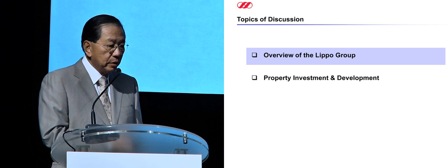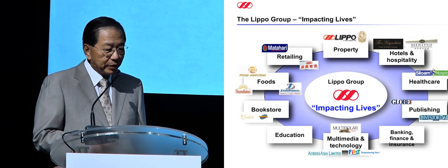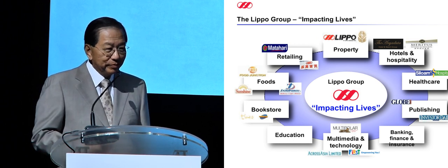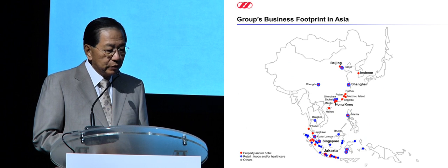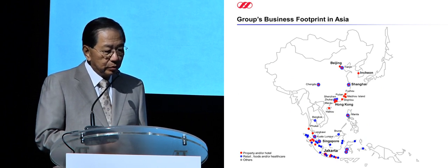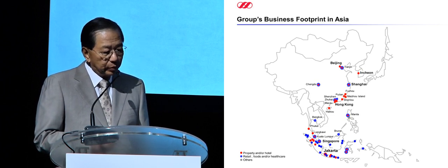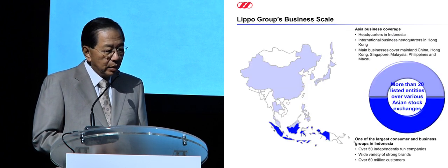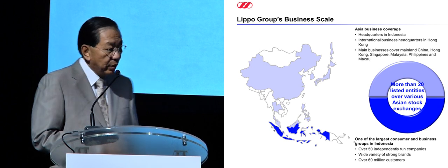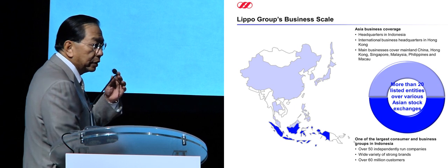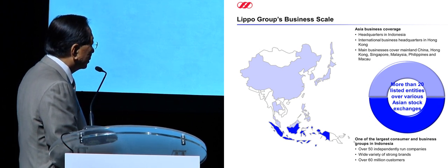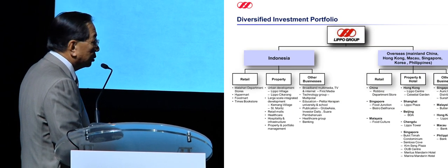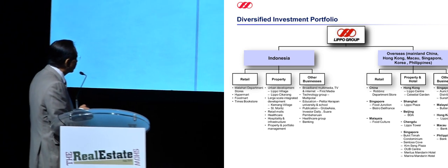Lippo Group has a slogan: impacting lives from womb to tomb. We want to make sure every aspect of life is covered by our services. Our business footprint is from Indonesia all the way to Beijing and Korea, and we have also developed in Australia. Our business scale includes roughly 20 listed companies in Asian markets and stock exchanges, 50 independently run companies, and over 60 million customers.